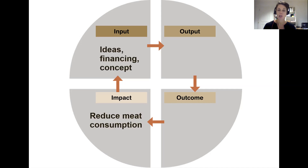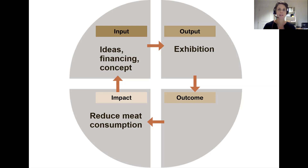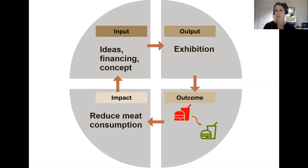We actually produce a project — we make a concept, we try to finance it, and then for example we produce an exhibition that shows what meat consumption means for the environment. Maybe three thousand people come and visit this exhibition, and eighty percent of them decide they really want to reduce their own meat consumption. The next time they go to a restaurant, instead of choosing a hamburger they try a vegetarian meal, and they might decide they actually like it and start trying more vegetarian meals. So just because of our exhibition we could contribute a bit to reduced meat consumption in Switzerland, which was our impact.